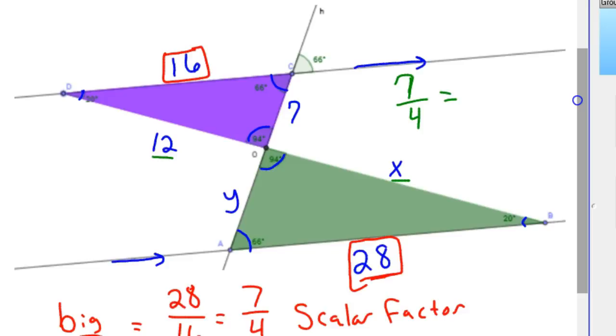So you would take 7 over 4 equals x over 12. And so now you do common denominators or cross-multiplying is probably the quickest method. But we would take this side times 4 over 4, this side times 12 over 12.